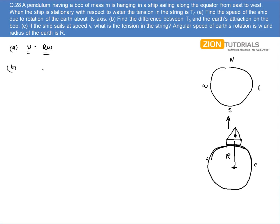In second case, we have to calculate the difference between T₀ and the earth attraction on the bob. Now the earth's attraction is Mg.